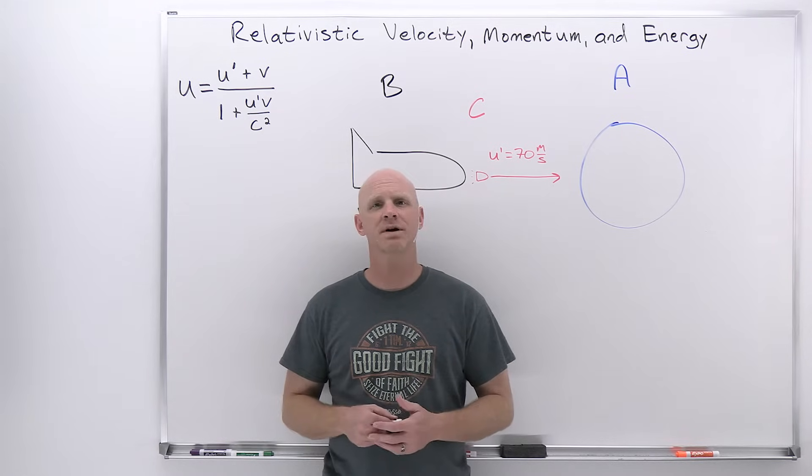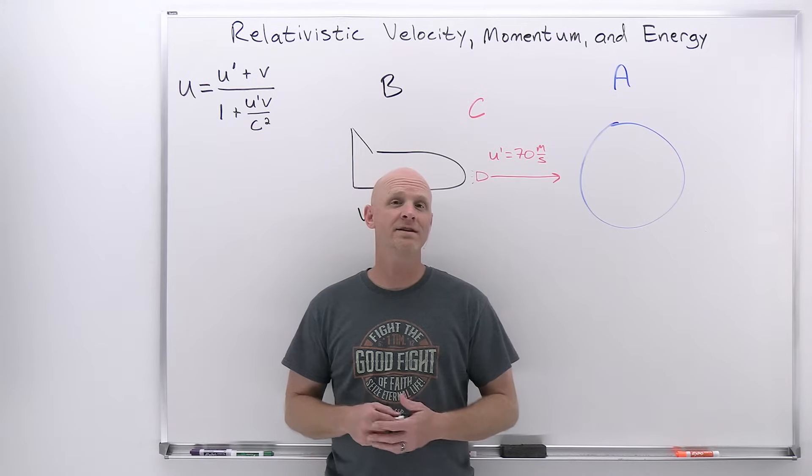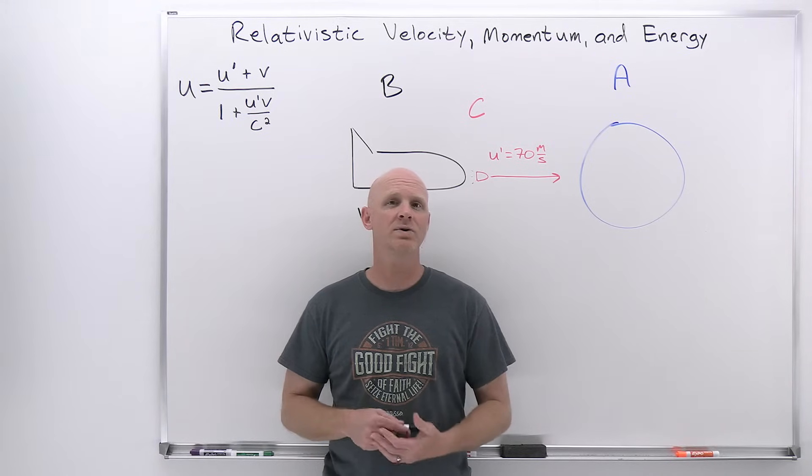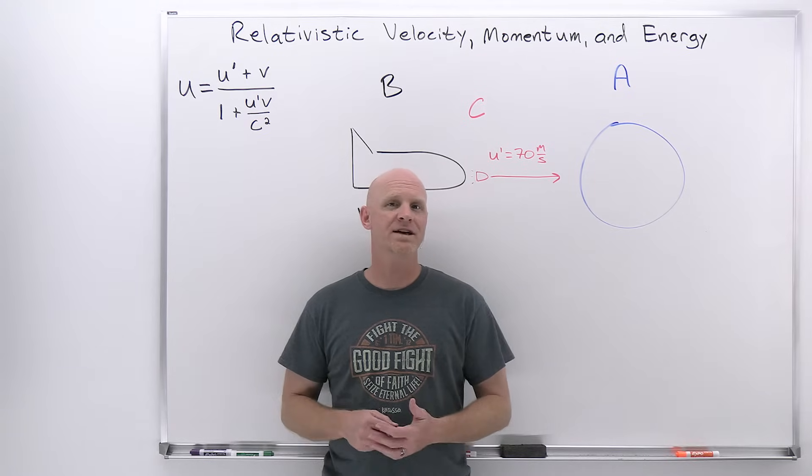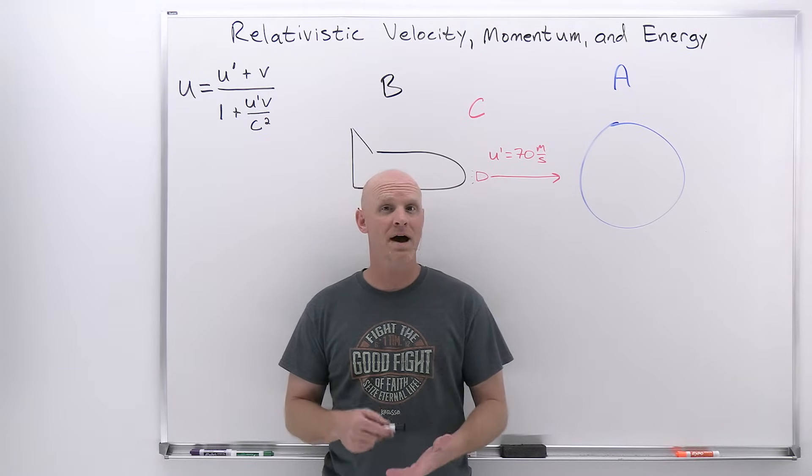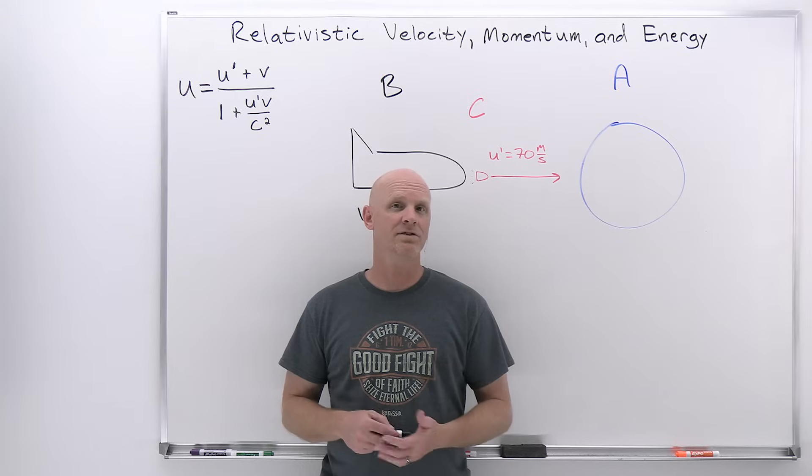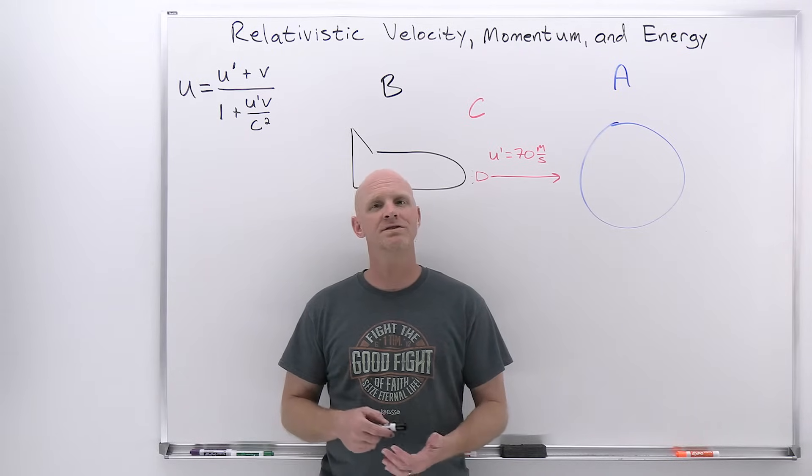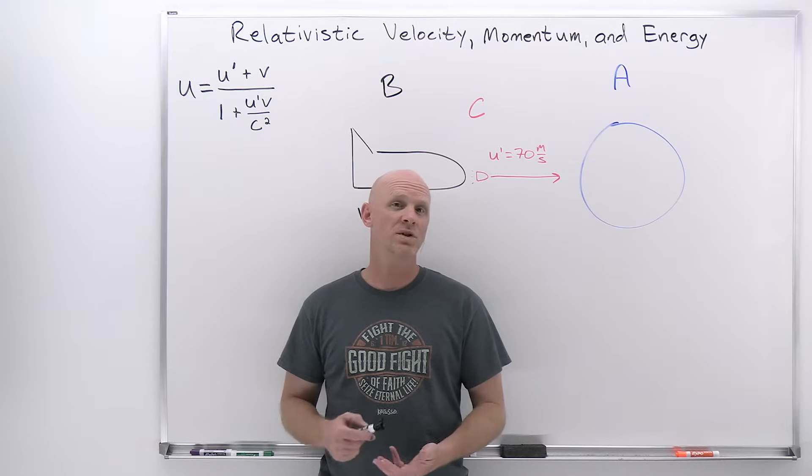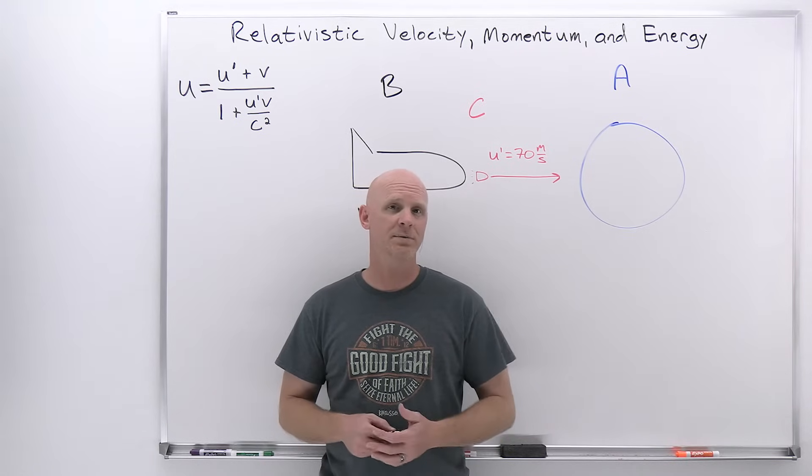We saw one of the postulates for special relativity was that the speed of light in a vacuum has the same value in all inertial frames. It turns out part of the fallout here is that any object with a definite mass cannot have a relative velocity faster than the speed of light. We're going to have to alter our definition of relative velocity as well as momentum and energy which are dependent upon it.